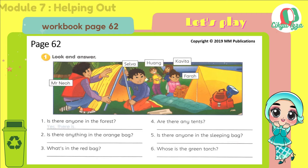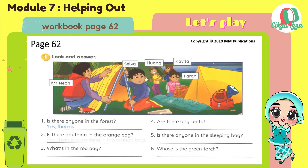Number one: Is there anyone in the forest? Yes, there is. Number two: Is there anything in the orange bag? Yes, there is something in the orange bag. Number three: What's in the red bag? There are two torches in the red bag. Number four: Are there any tents? Yes, there are two tents.